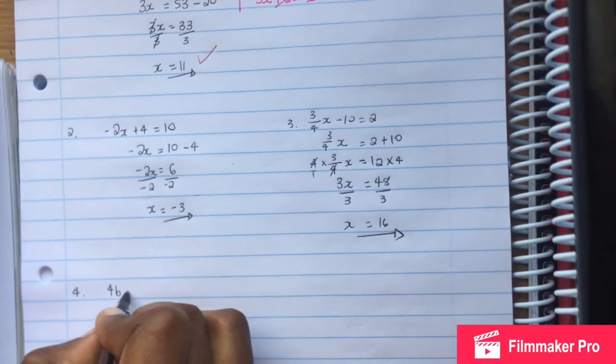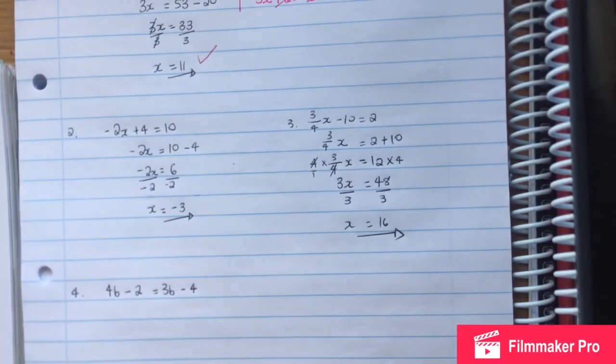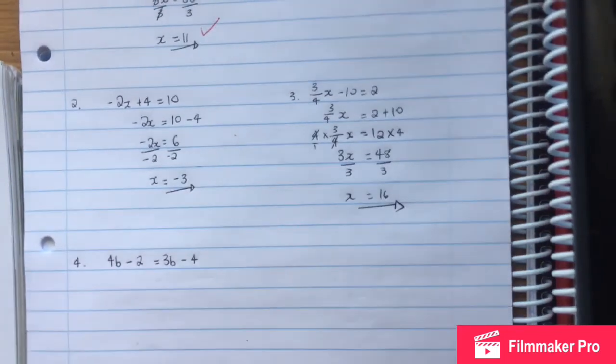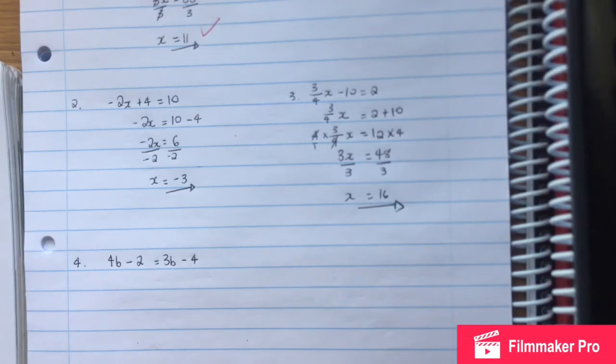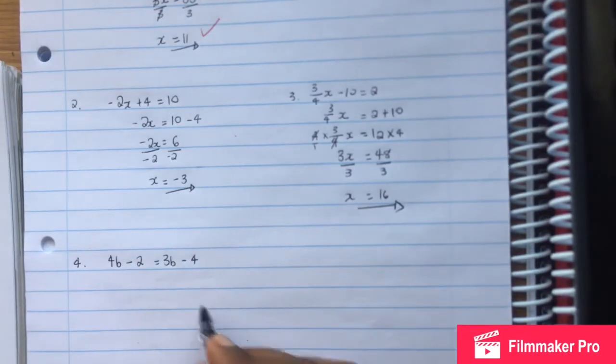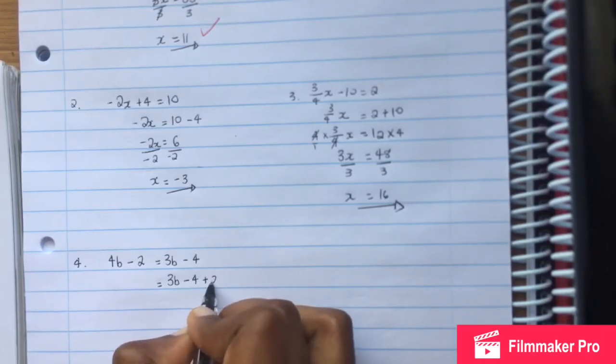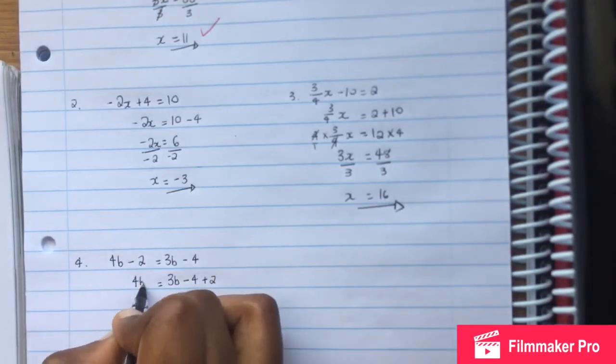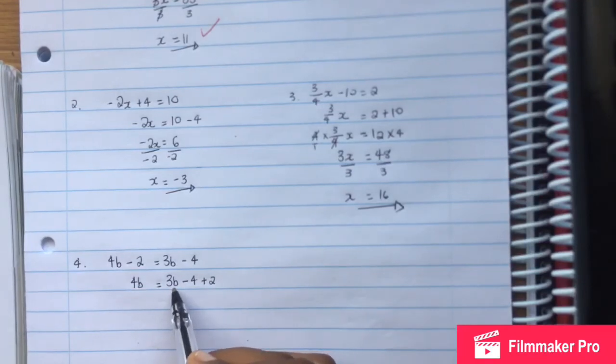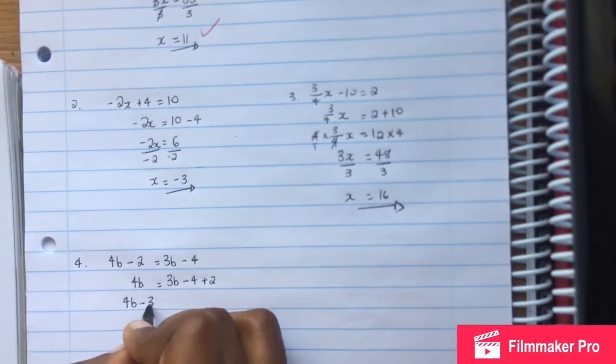4b minus 2 is equal to 3b minus 4. What we need to do is group the like terms together. We need to group terms so they are similar to each other. So we want the 2 to move to the other side, so it becomes positive 2.